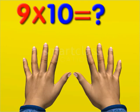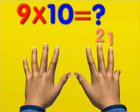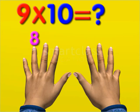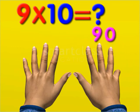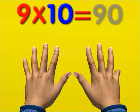Finally, to find 9 times 10, bend the little finger of your right hand. The number of fingers to the left of the bent finger is 9, and the number of fingers to the right is 0. Thus, 9 times 10 is equal to 90.